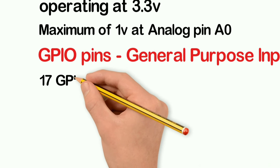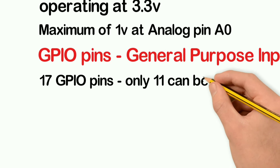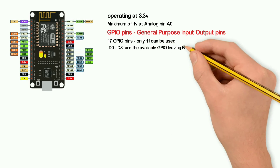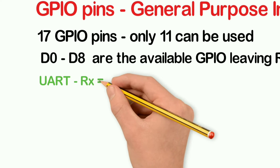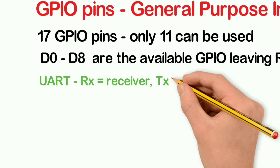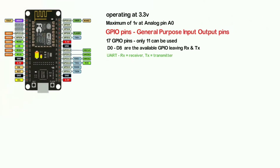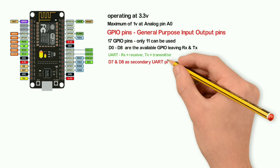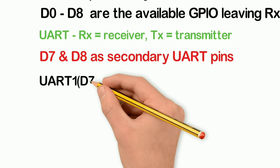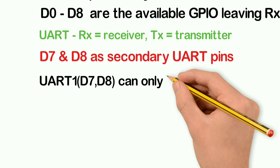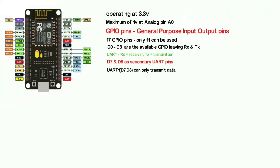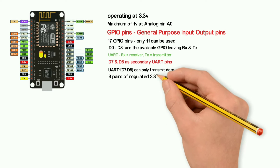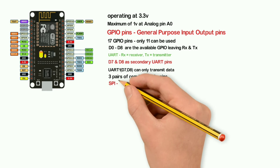There are digital pins D0 through D8, as well as RX and TX pins. D7 and D8 can be used as secondary UART ports. The first set of UART ports is RX/TX, and D7 and D8 form the second set. For the second set, D8 is used for transmission. The chip is also connected internally for data fetching.